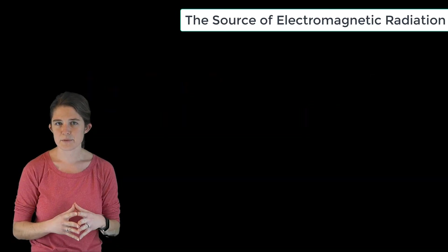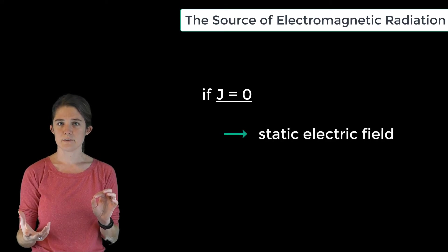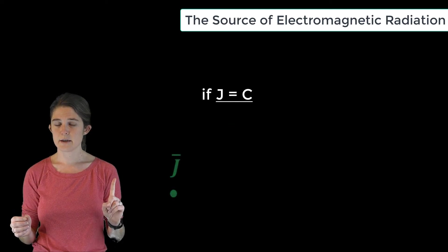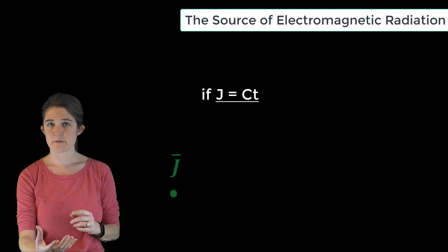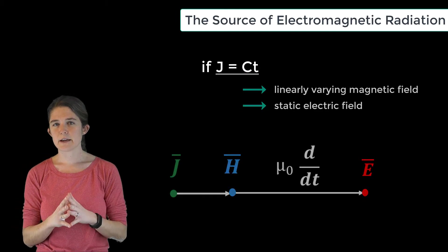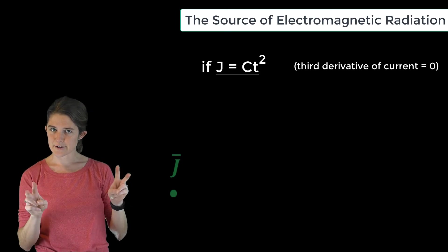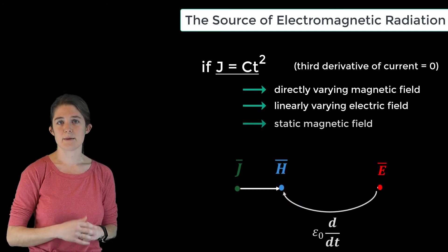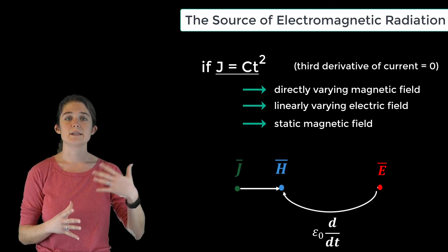So you see the pattern: if you have a static charge where the velocity of the charge is zero, the result is only a static electric field. If you have a constant current where the derivative of velocity is zero, it results in a static magnetic field. A linearly varying current, where the second derivative of velocity is zero, gives a magnetic field plus a static electric field. If the second derivative is nonzero but the third derivative — the jerk of the charge — is zero, you get a magnetic field plus a linear electric field plus a constant magnetic field.